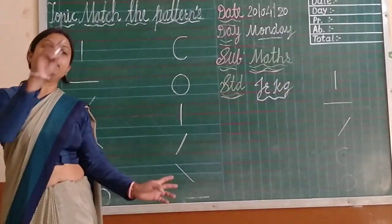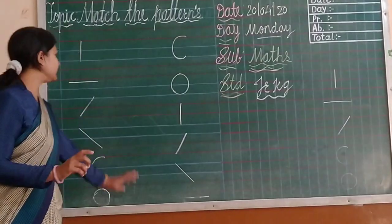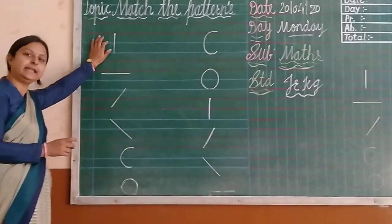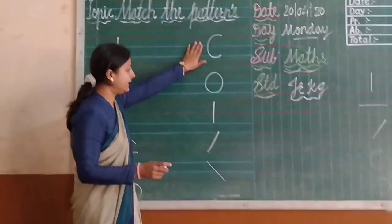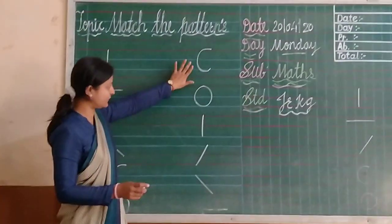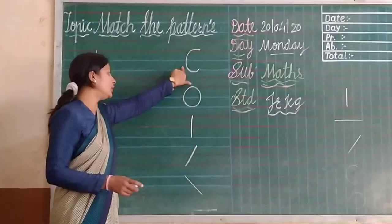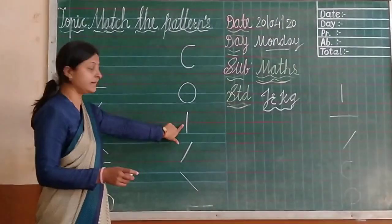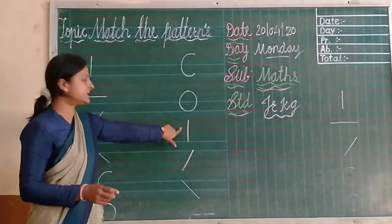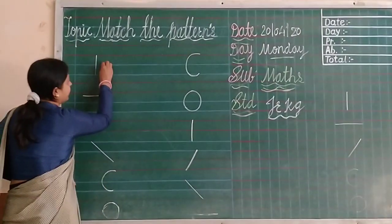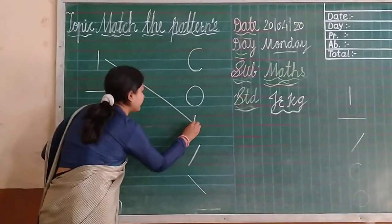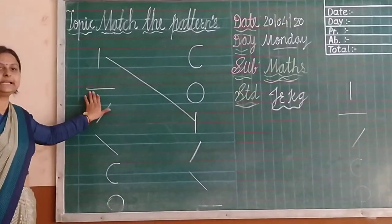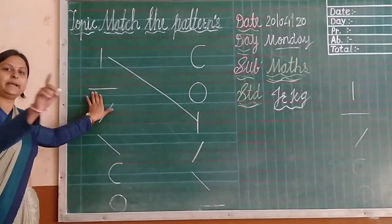Now let's match the patterns. First of all, this one is standing line. So in this row, there is a standing line — this one is standing line. And this one is also standing line. So matching. Very nice. Now this one is slipping line — which pattern is this? Slipping line.